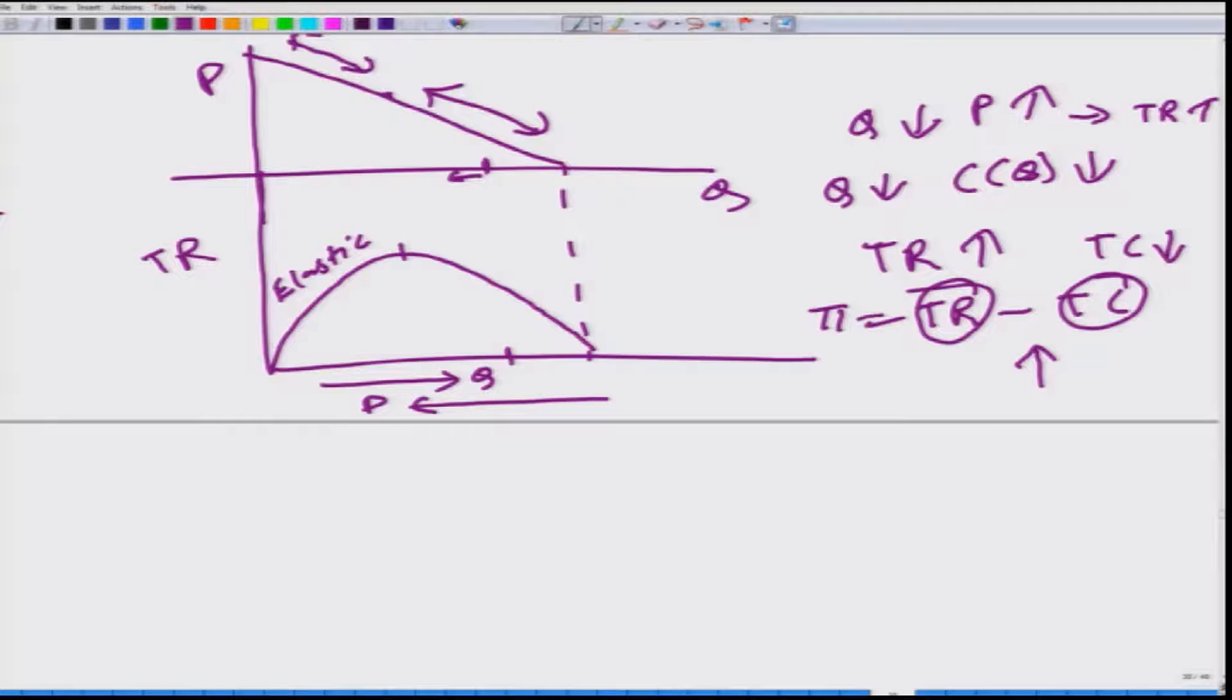So, a firm which is interested in maximizing profit should keep on decreasing the quantity, or in other words, keep on increasing the price as long as it is in the inelastic zone. So, optimally it should never be producing in the inelastic zone.